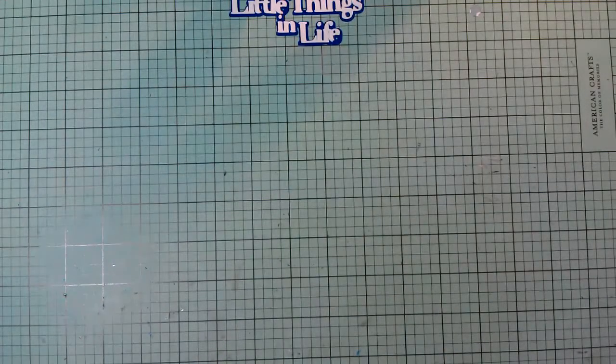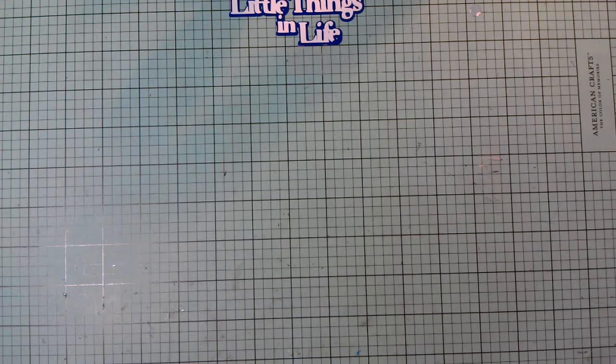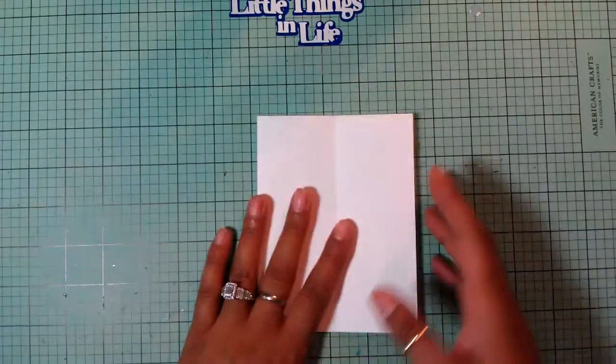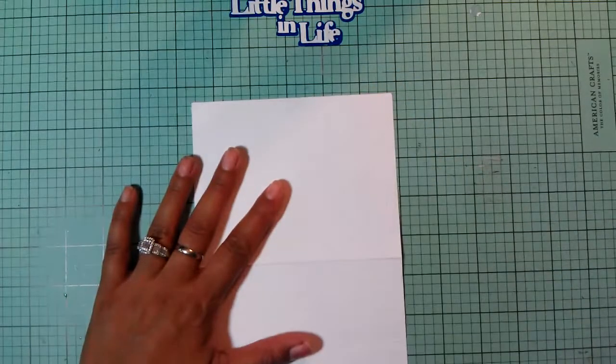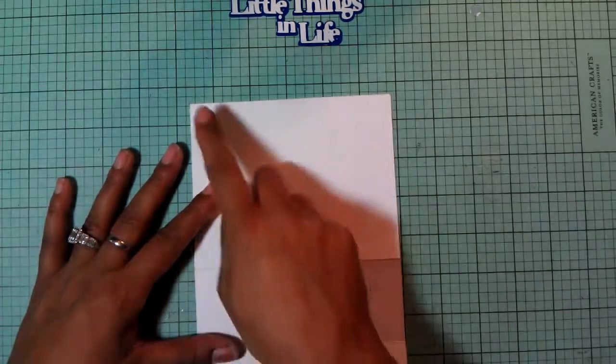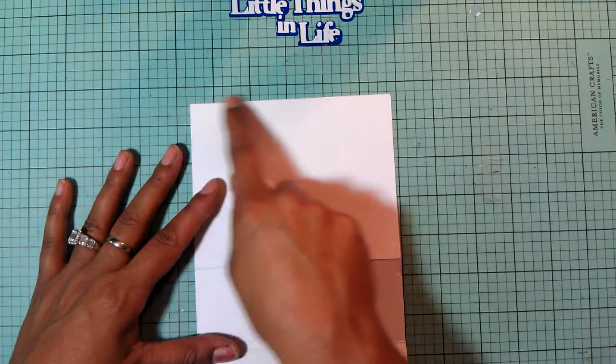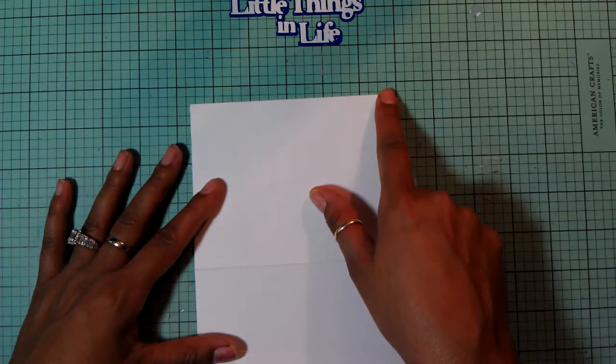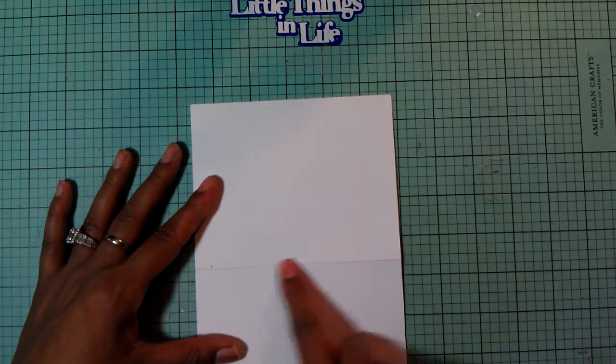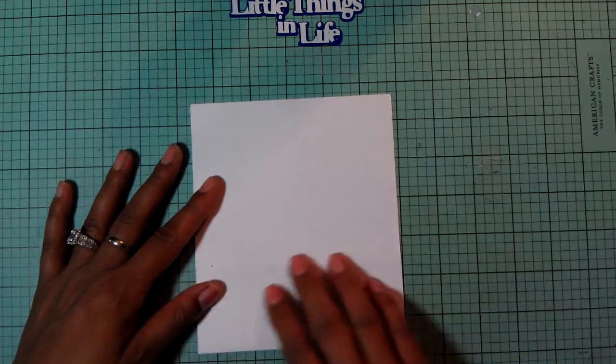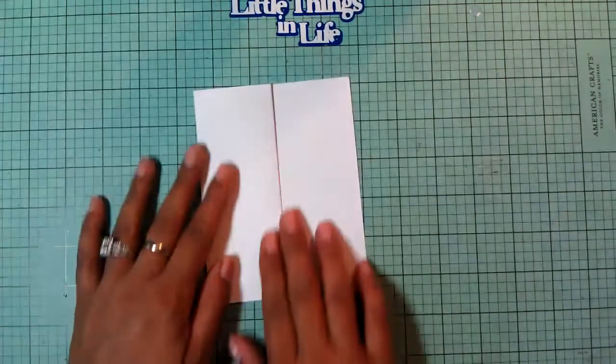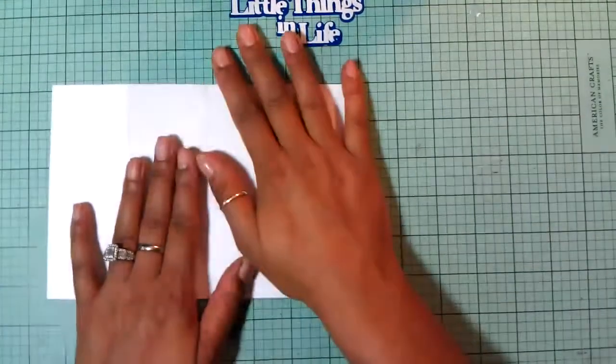My card is going to be a Z Fold card. So I already scored it. What you do is just get a 5.5 by 8.5, score it at 4.5 and then score it again at 2.1. And there goes your Z Fold card. So let's start decorating the inside.